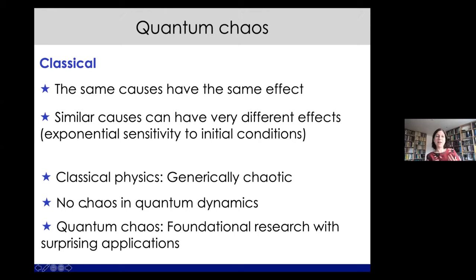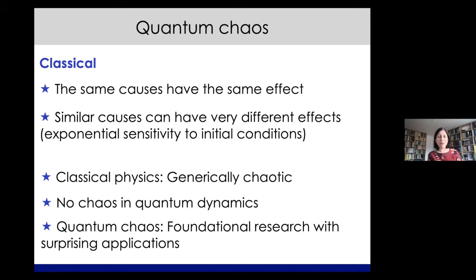In quantum mechanics there is no such thing as actual chaos in this dynamical sense. Quantum dynamics is unitary, which means the overlap of initial states stays invariant over time — so there's no chaos in the same dynamical sense. But clearly there are classical systems that are chaotic that have quantum counterparts showing signatures of this chaos. This is at the foundation of the field of quantum chaos, which is about the correspondence of quantum and classical descriptions.